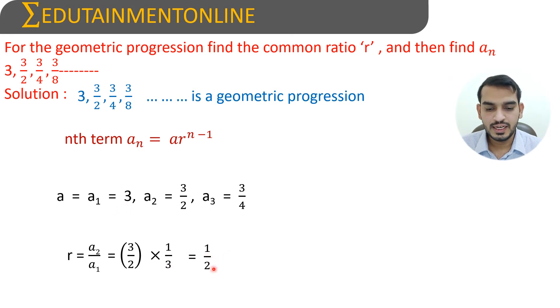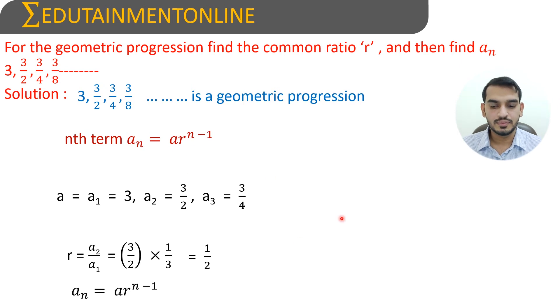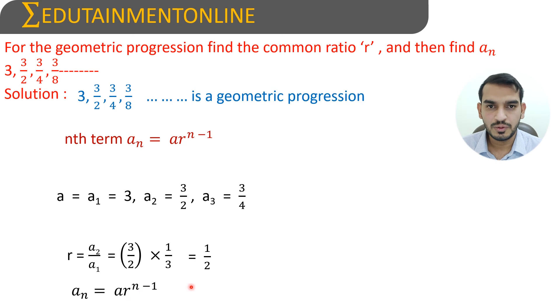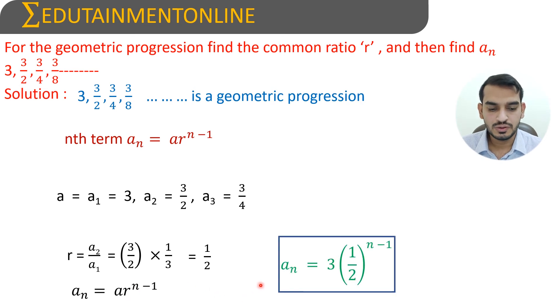Now A is 3 and R equals 1/2. Substituting in the formula to find the nth term: An equals A into R power N minus 1, which equals 3 into (1/2) whole power N minus 1.